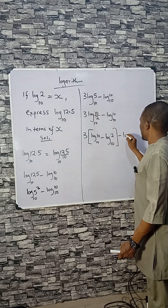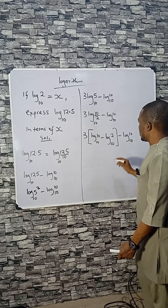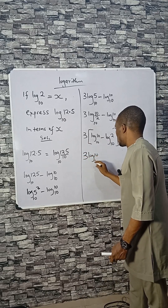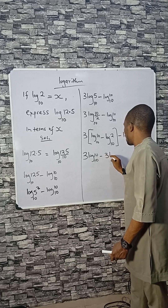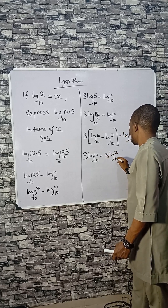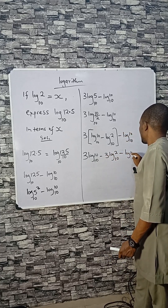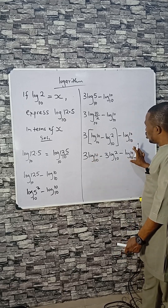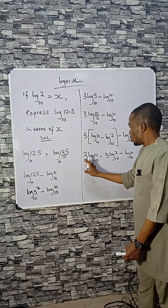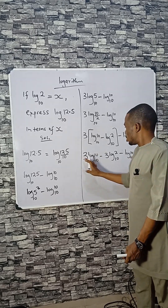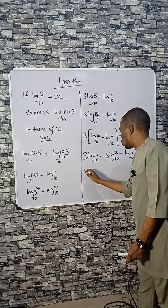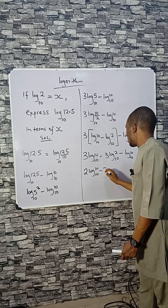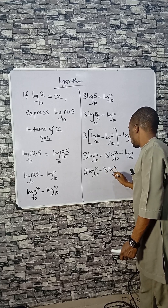The 3 multiplies the bracket: 3 log 10 base 10 minus 3 log 2 base 10, then minus log 10 base 10. Combining like terms: 3 log 10 base 10 minus log 10 base 10 gives 2 log 10 base 10, minus 3 log 2 base 10.